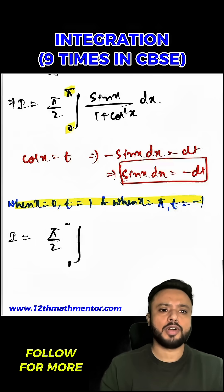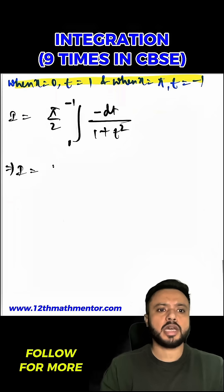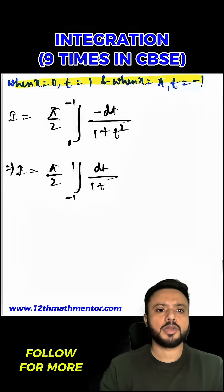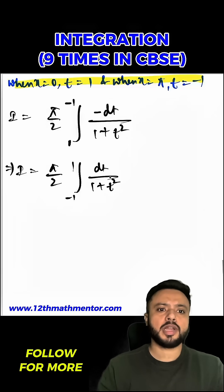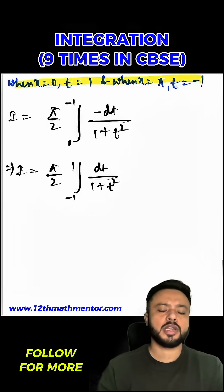Now I can write the given integral in terms of t as I equals π/2 times the integral from 1 to minus 1 of minus dt over (1 plus t²), which I can rewrite as I equals π/2 times the integral from minus 1 to 1 of dt over (1 plus t²). Here, 1/(1 plus t²) is an even function.